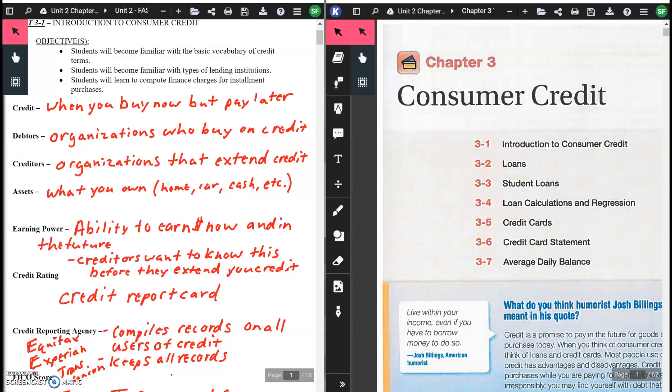Credit is when you buy something but pay later. Debtors are organizations who buy on credit. Creditors are organizations that extend credit. Assets are what you own - your home, your car, cash, what you have in savings, things like that. Earning power is the ability to earn money now and in the future.